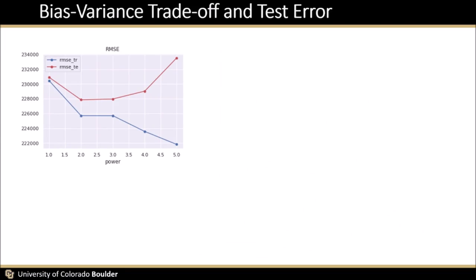So back to our test error, why it goes down and then goes up, because of the bias-variance trade-off. The bias goes down as our model complexity increases, and the model variability goes up as our model complexity goes up.